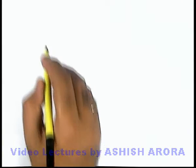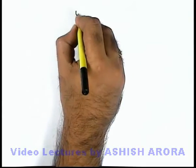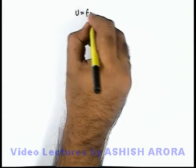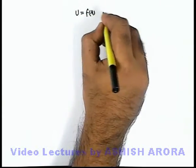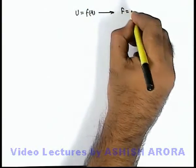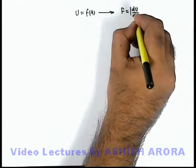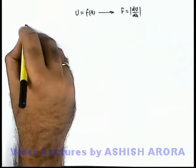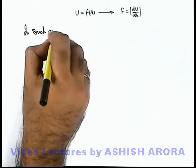So we were talking about the hypothetical atom in which the force field is different and given as potential energy equal to a function of r, using which the bounding force we can write as |dU/dr|. So here we can write that in such an atom...